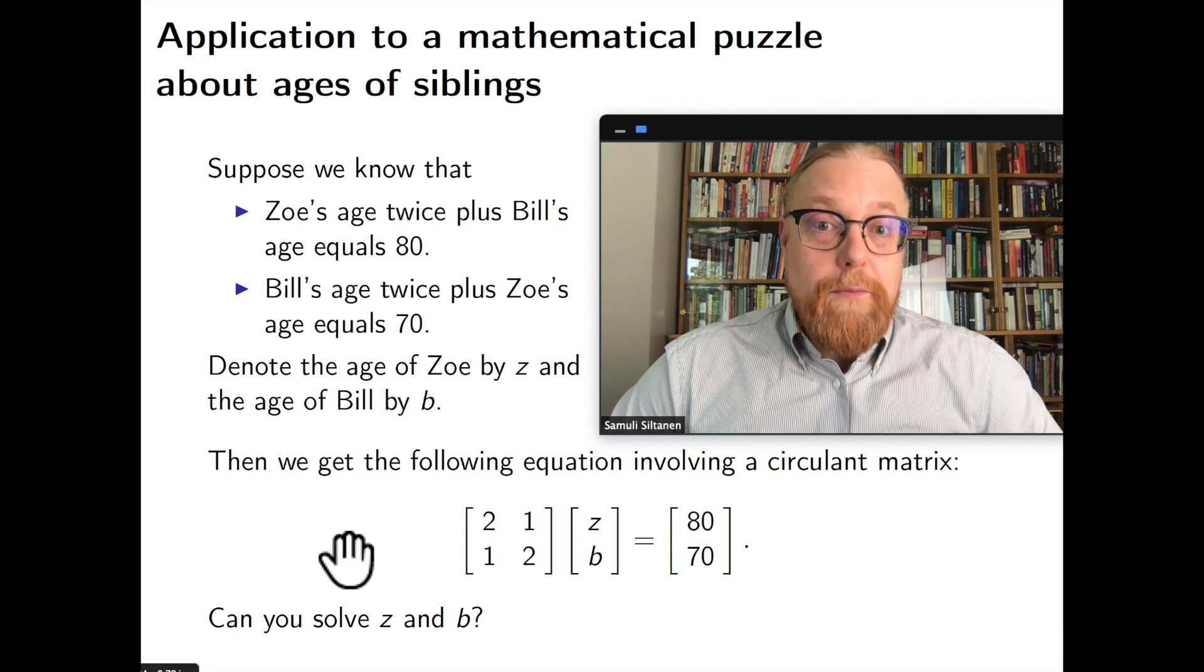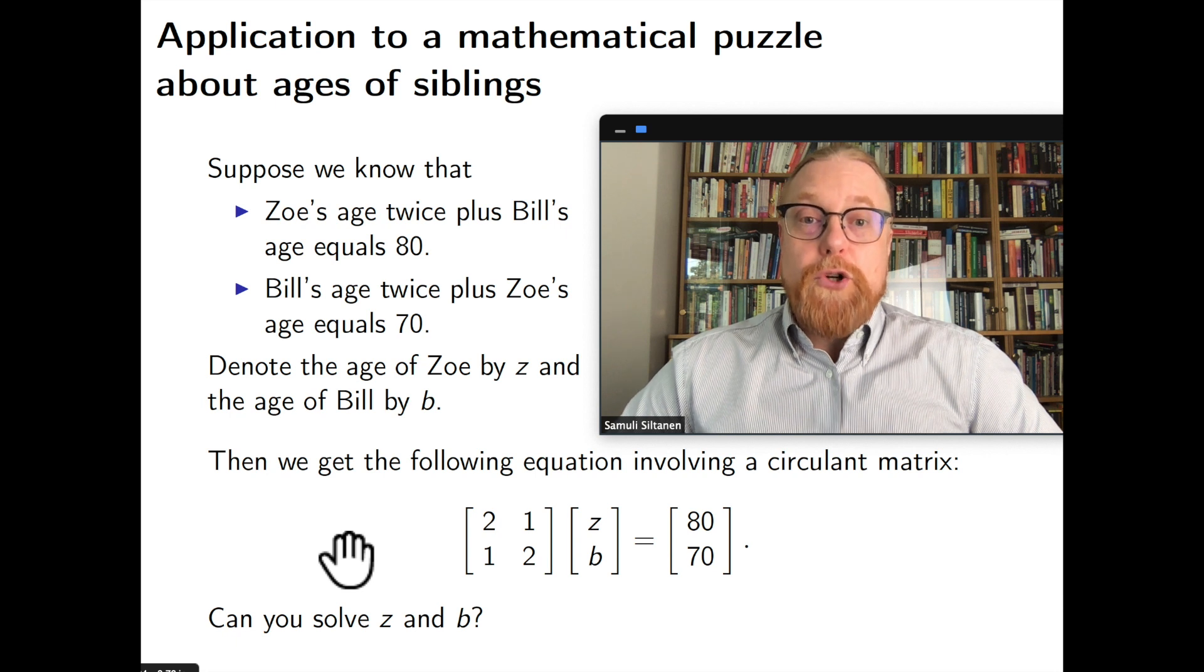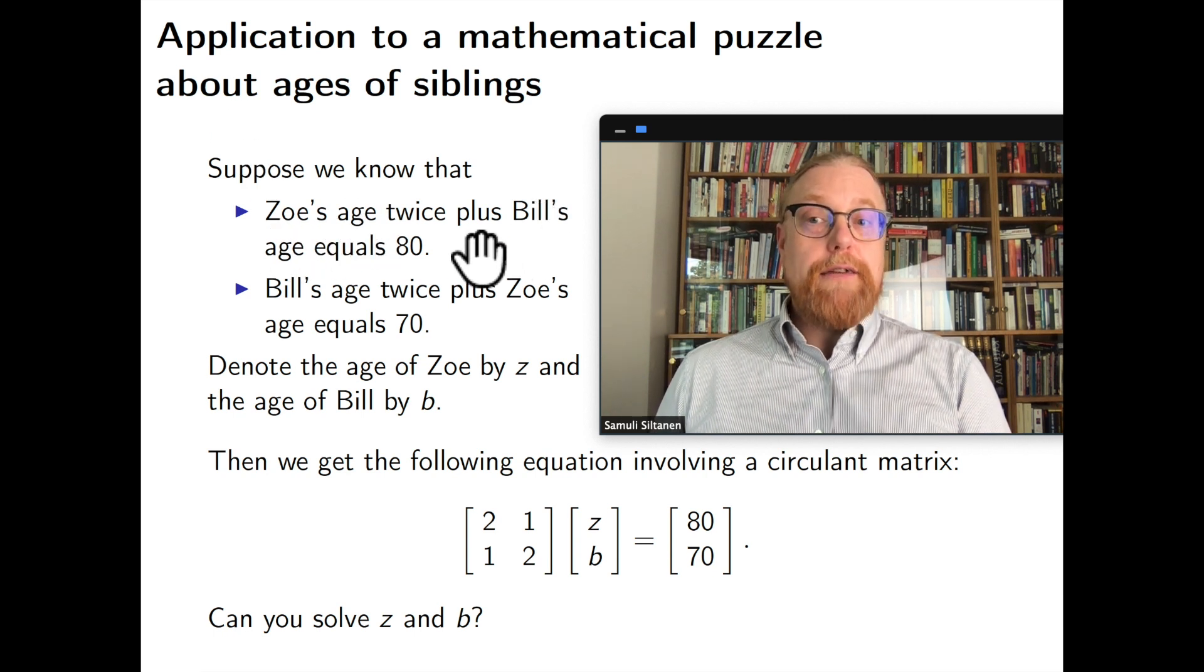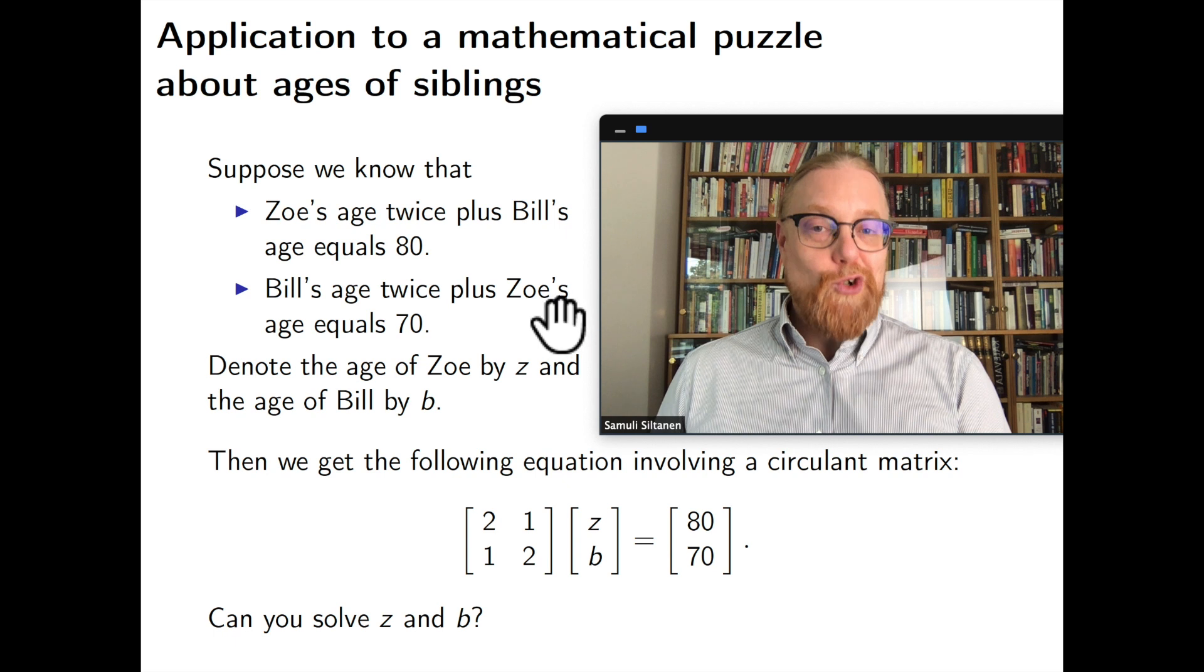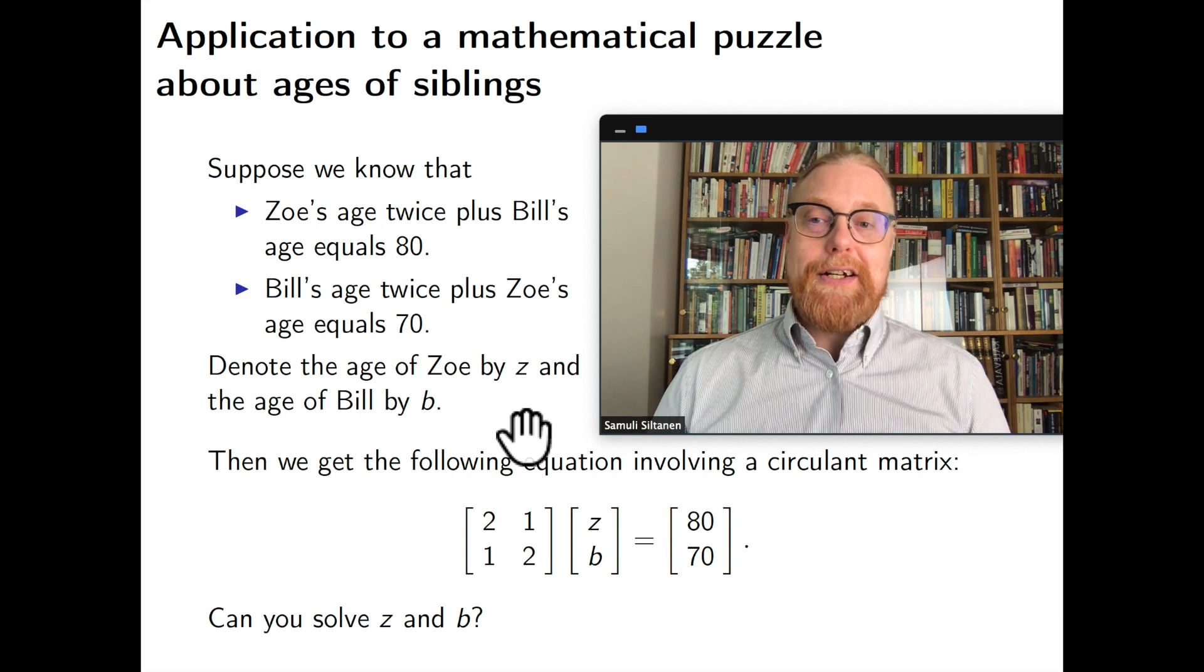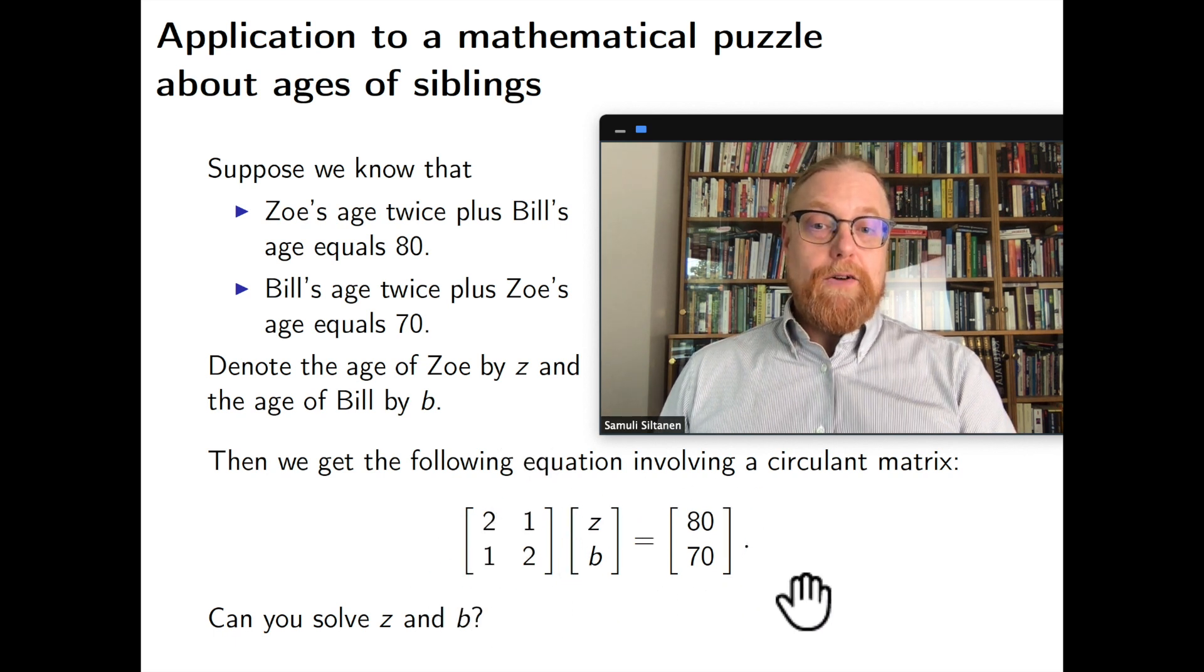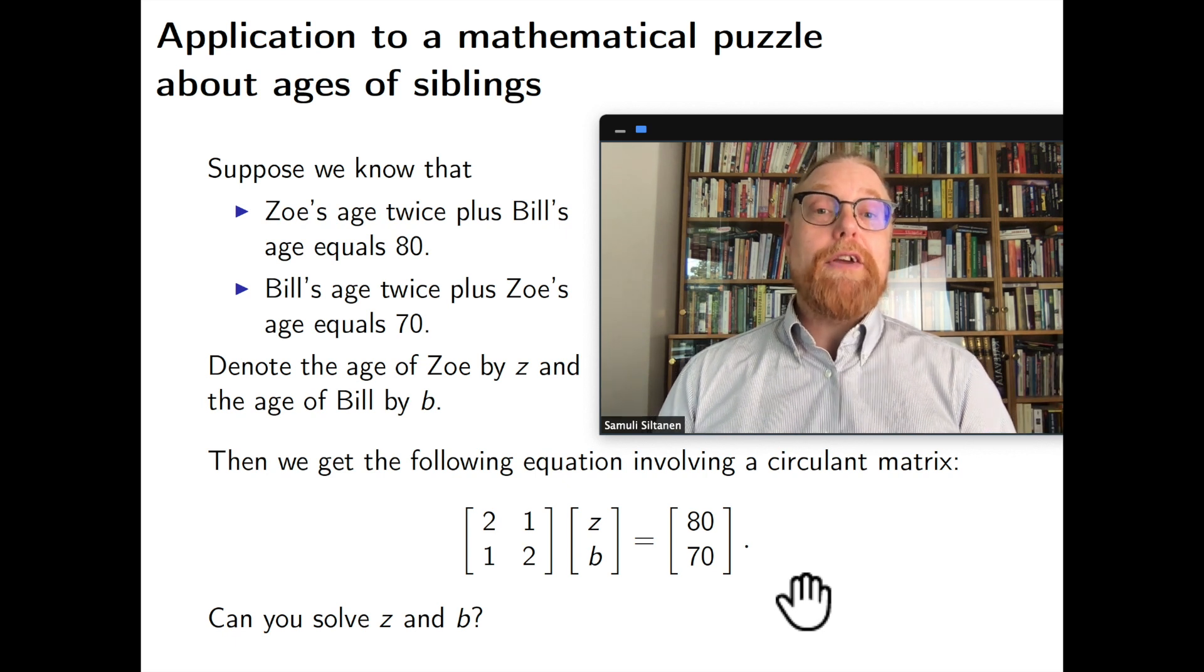Then let's introduce a little example that will run throughout this lecture. It's a little puzzle about the ages of Zoe and Bill. So let's say we know two things. Twice Zoe's age plus Bill's age gives 80 and twice Bill's age plus one's Zoe's age gives 70 and then we should compute what is Zoe's age Z and Bill's age B. We can write this puzzle in matrix form like this.